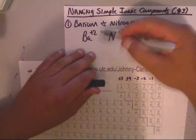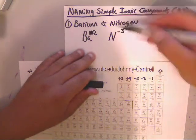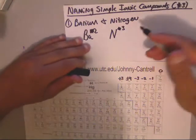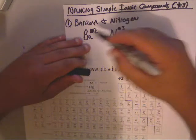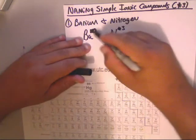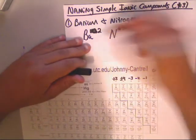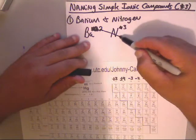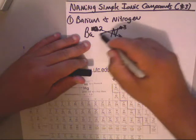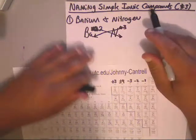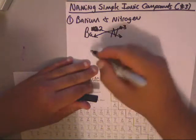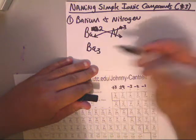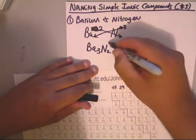Now, ignore the plus and minus signs. The numbers are totally different, which makes this easier to see. The 2 will come down behind the N, and the 3 will come down behind Ba, so our formula will be Ba₃N₂.